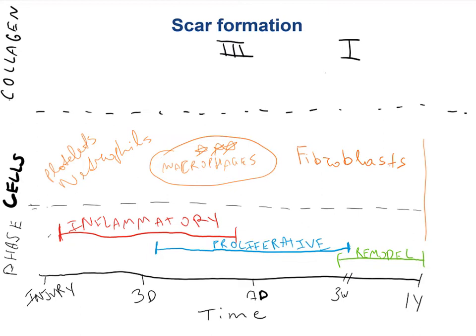Think about it — if you don't stop bleeding, which the platelets are very important in doing, you're just going to keep bleeding. No matter what cells get there, the patient is just going to exsanguinate. You want to stop the bleeding first. The platelets get there first, and the neutrophils come right after — that's during the inflammatory phase, which lasts about a week. The neutrophils come in and start cleaning the dead debris and dead cells. Then after about three days, macrophages come in. I put three stars there because macrophages are the most important cells in wound healing and scar formation as well.